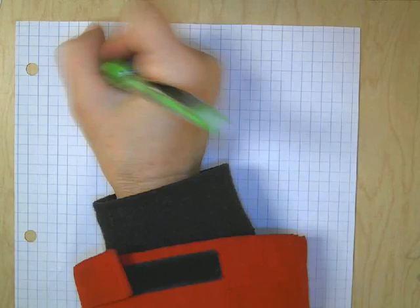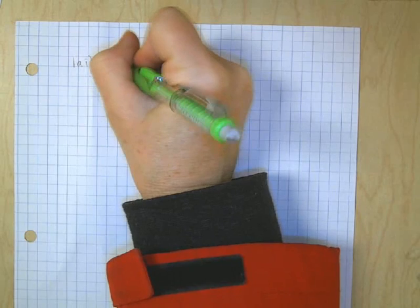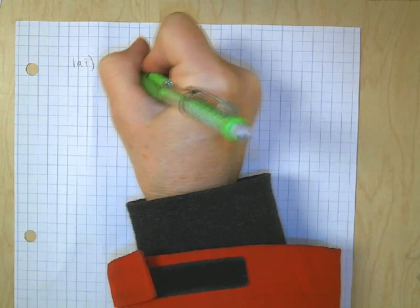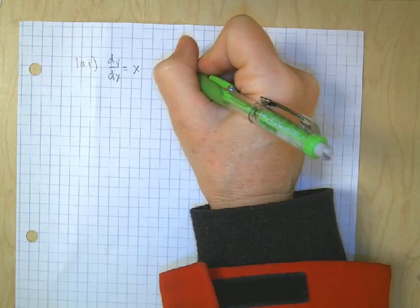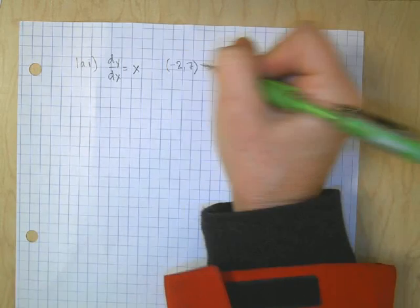So the first problem, number 1AI, they give you that dy/dx, so the derivative, is equal to x, and we know that the original curve passes through negative 2 and 7.